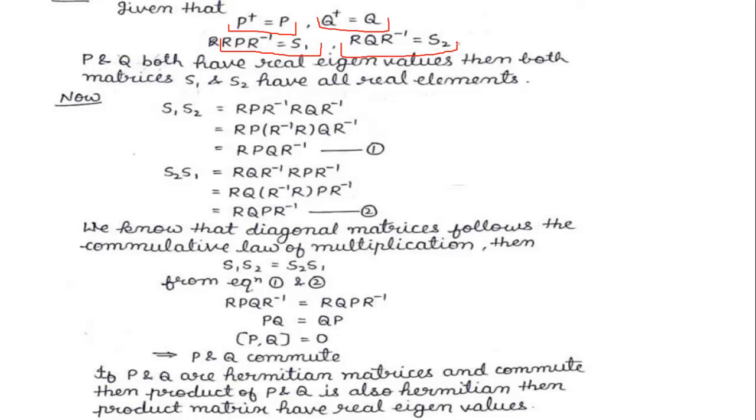Now P and Q both have real eigenvalues, then S_1 and S_2 have all real elements. So we take S_1 and S_2 and we need to get RPQR^(-1) and check the product S_1S_2 and S_2S_1.